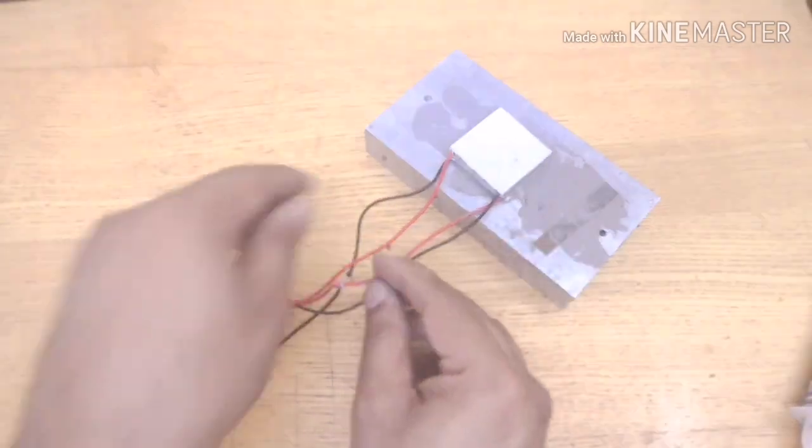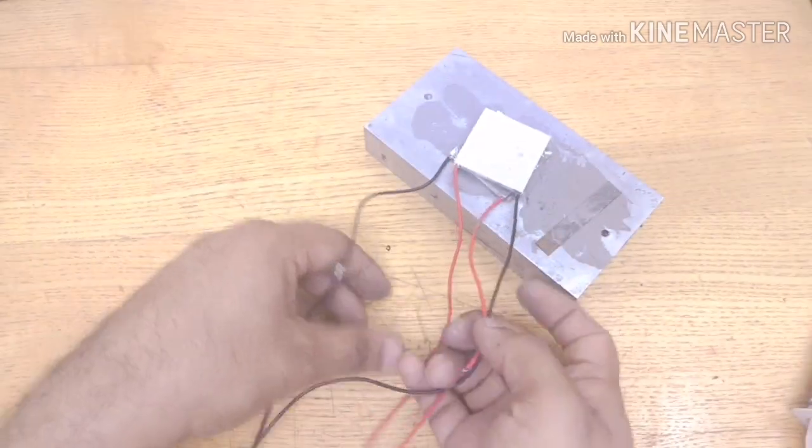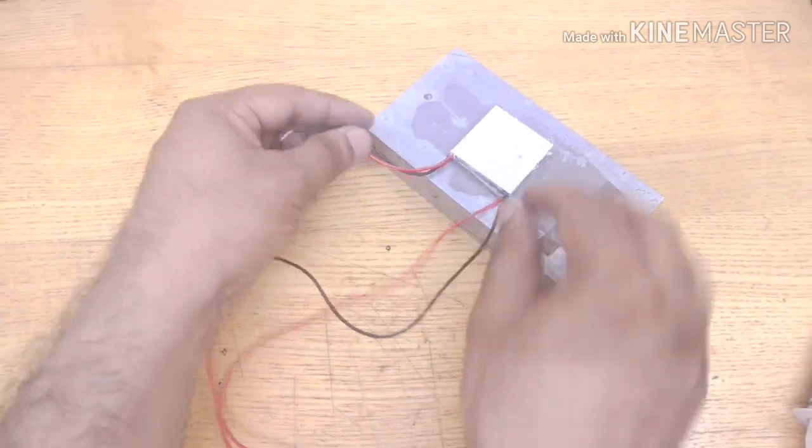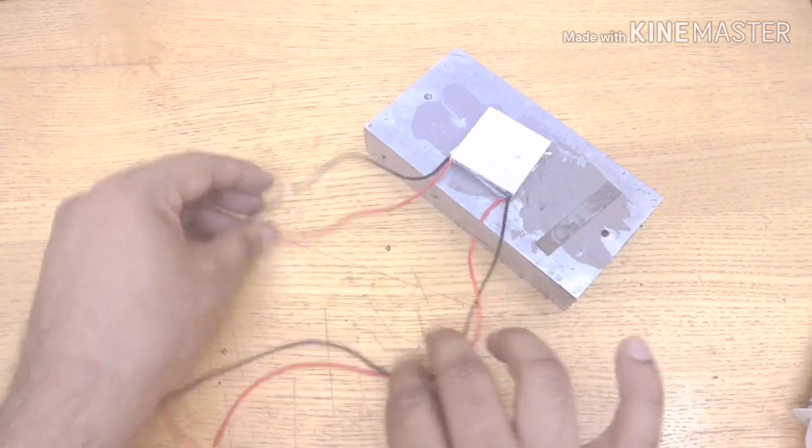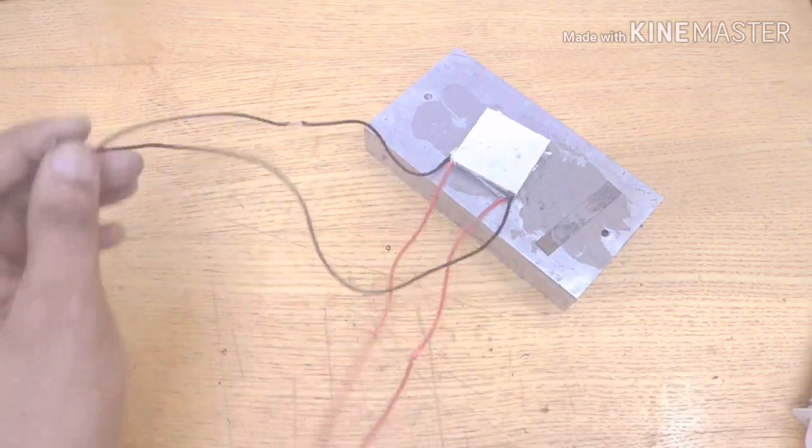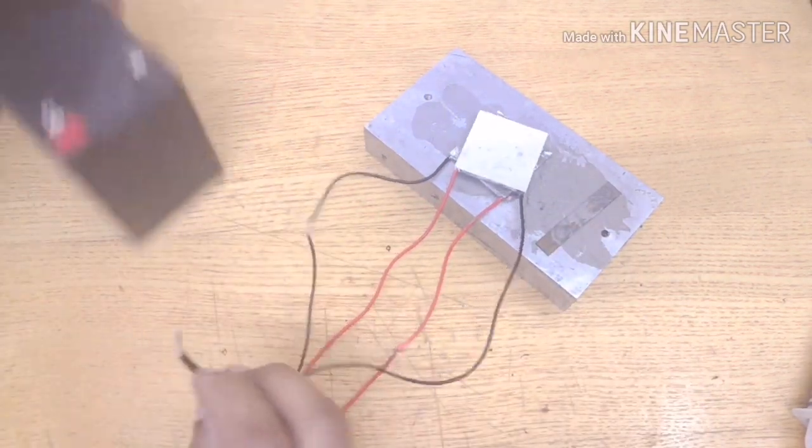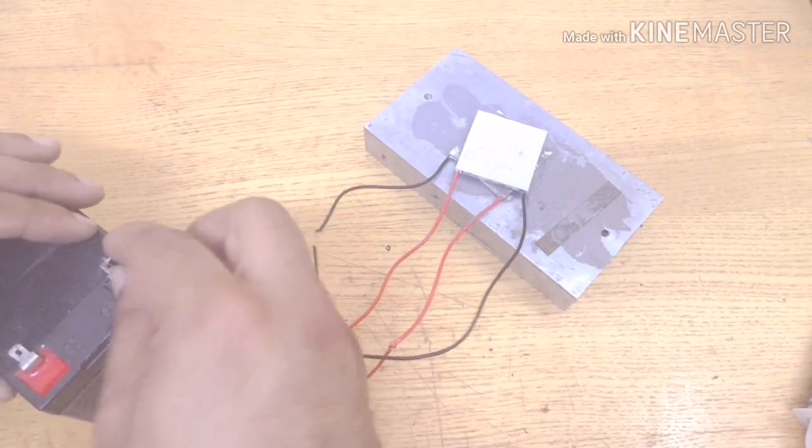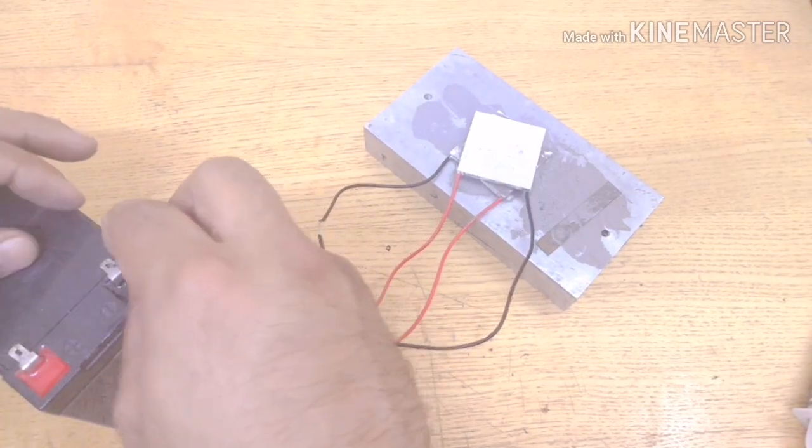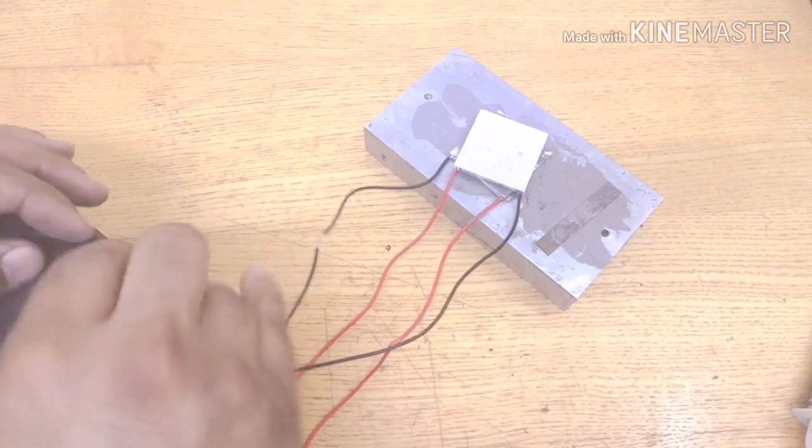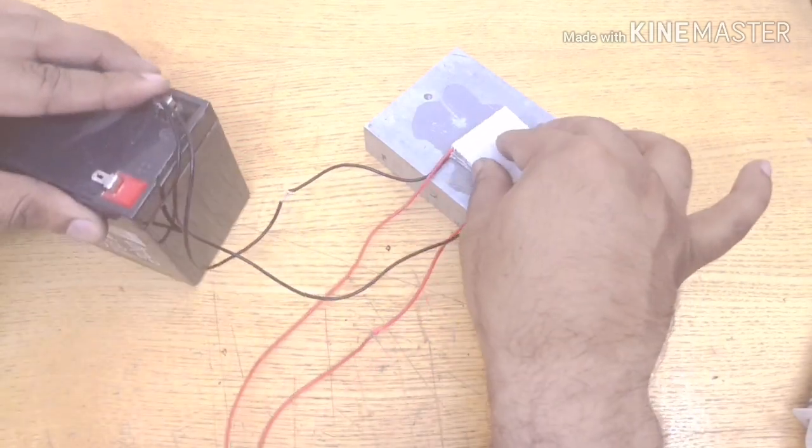I've already connected the wires in parallel. Let's connect it to the battery. This is a 12-volt lead-acid battery and I'm going to power my Peltiers using the same battery. We will see what temperature we're receiving once we start the connection.